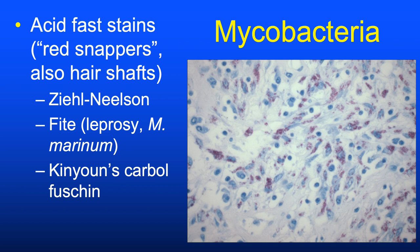The acid-fast stains highlight mycobacteria—so-called red snappers—and there are different variants. We tend to use the Fite stain most often, which helps pick up leprosy. We don't often see tuberculosis in the skin in our practice.